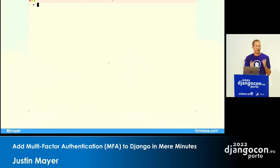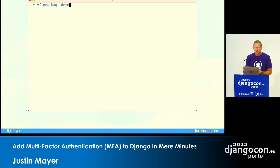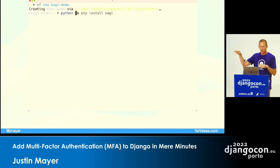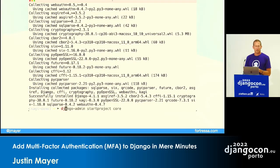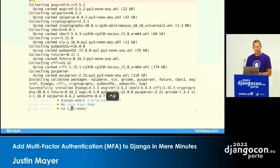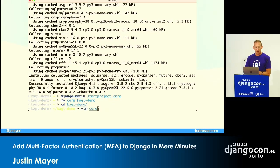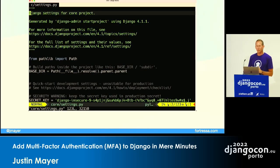I'm going to show you how to add multi-factor authentication to a fresh Django project in just a few minutes. I wanted to do this live, but presentation projection systems aren't really optimized for live demos, so I recorded myself doing this. I'm creating a virtual environment using Fish shell, now pip installing Kagi as well as its dependencies including Django 4.1.1. I'm creating a new project called 'core', renamed the overall project 'kagi-demo', and now editing the settings automatically generated by Django so we can start using Kagi.